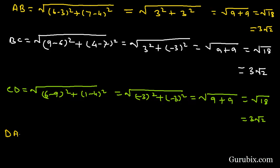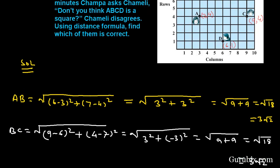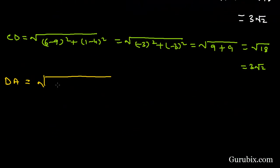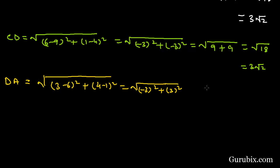Now we find DA, the distance between points D and A: DA equals the square root of (3 − 6)² + (4 − 1)², which equals √((−3)² + 3²) = √(9 + 9) = √18 = 3√2.